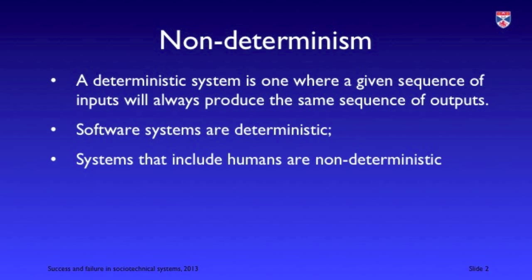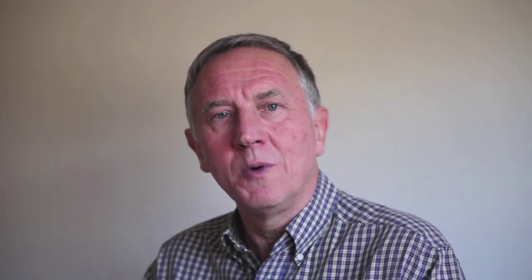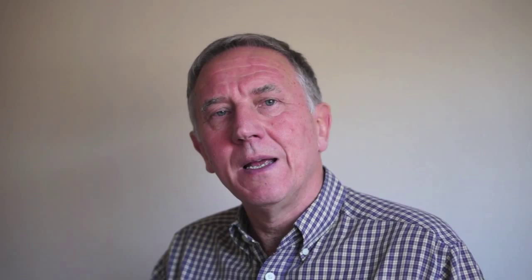If we have a deterministic system, the same sequence of inputs will always result in the same sequence of outputs. Software systems are deterministic entities — if we present a software system with a sequence of inputs, it will always produce the same sequence of outputs. Of course, inputs can come from all sorts of sources, but it is a truism that software systems are deterministic. It's only when we assemble them into more complex socio-technical systems that we get non-determinism.